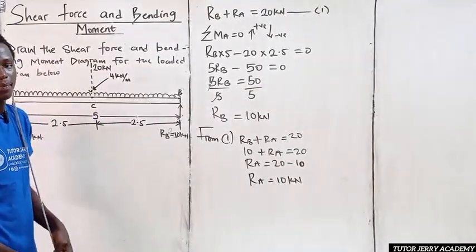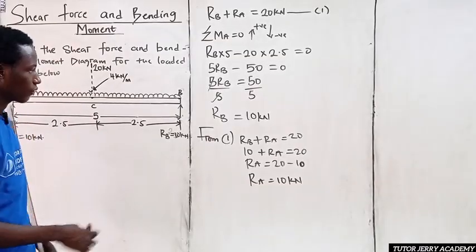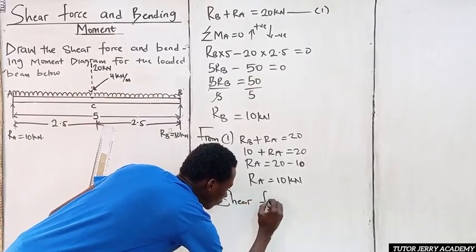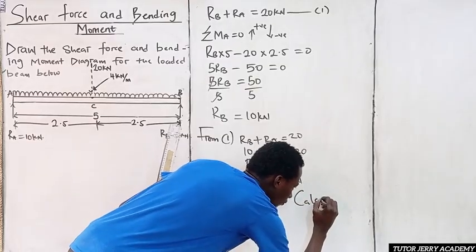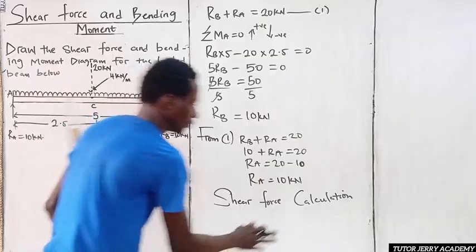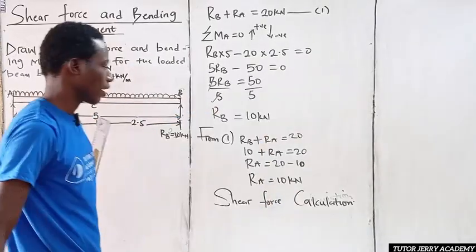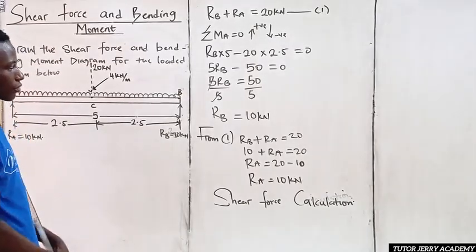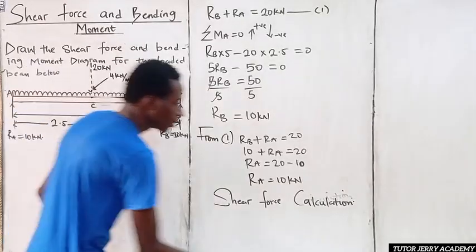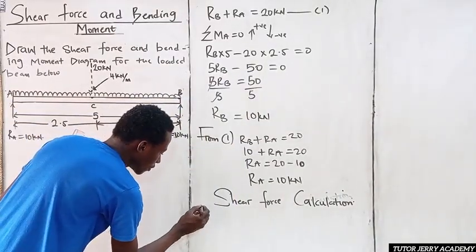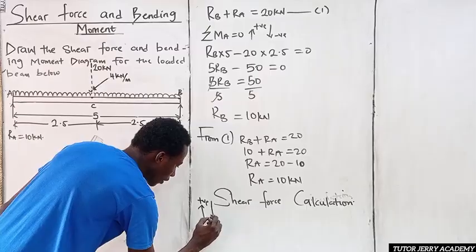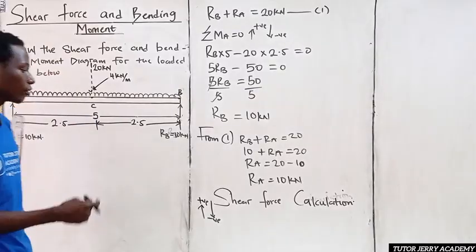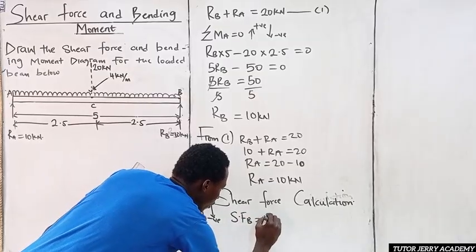Next, we are going to calculate the shear force at all points. For shear force calculation, we take upward forces as positive and downward forces as negative. The shear force at B is just the reaction at B, which is 10 kilonewtons.